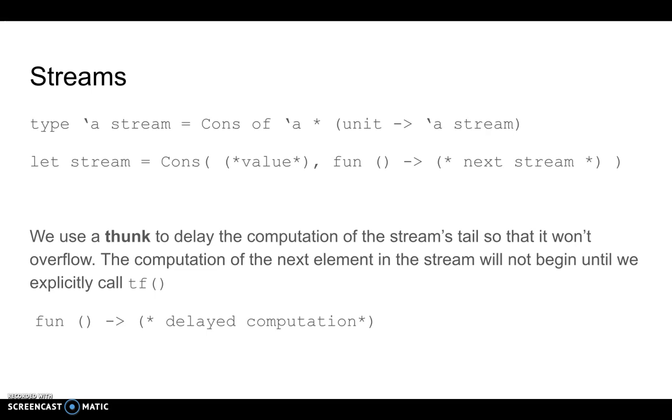Notice the thunk in our computation. We use this to delay the computation of the stream's tail so that it won't overflow. Since the stream is an infinite list, we do not want OCaml to be trying to compute every element in the stream right at the beginning, so this will allow us to only compute the next element in the stream when we actually need it.